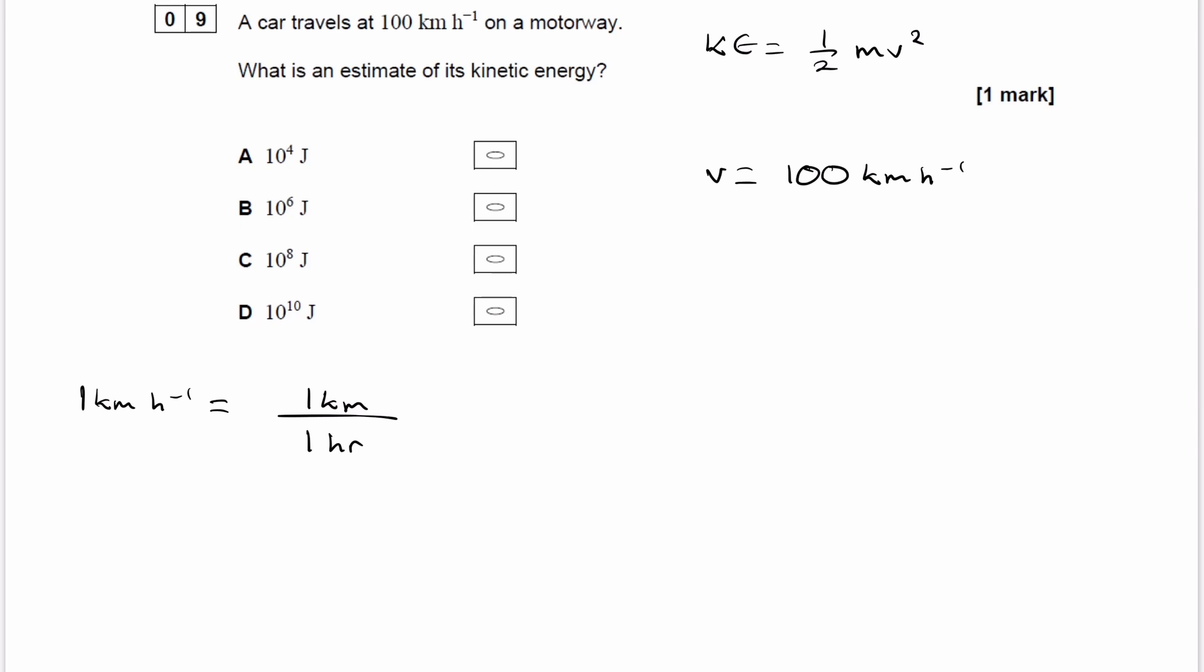And then this is the same thing as if you break these down into meters and into seconds. In 1 kilometer we have 1,000 meters, and then in 1 hour we have 3,600 seconds. And that's just by doing 60 minutes in 1 hour, multiplied by the number of seconds in each minute.